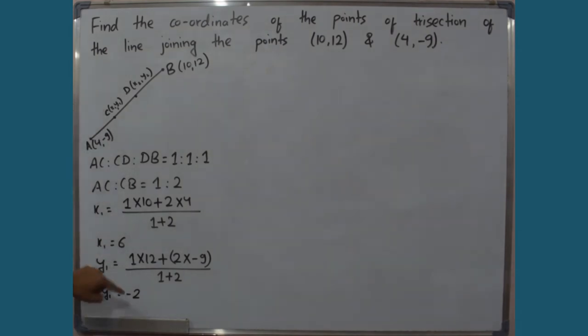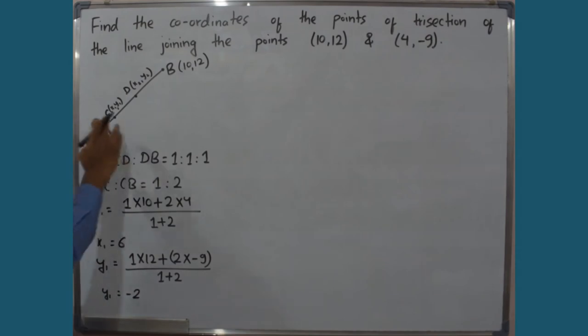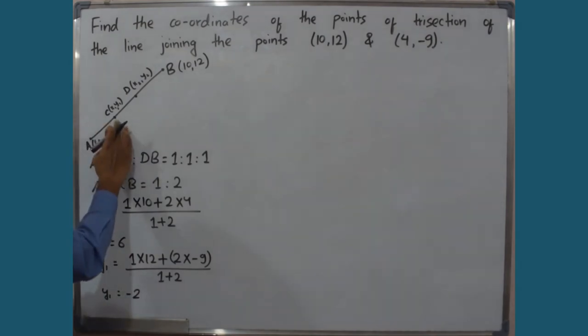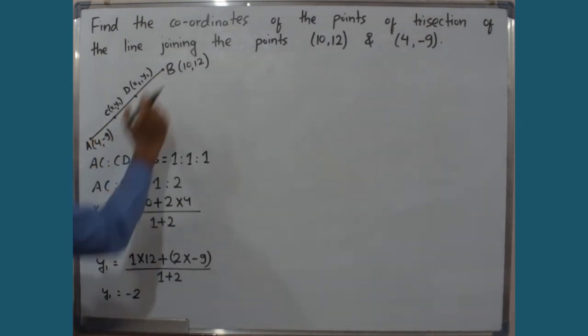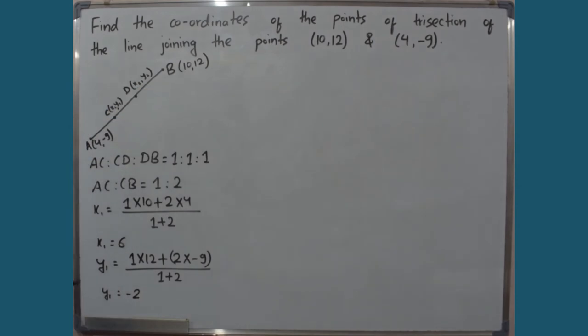So the coordinates of point C are (6, −2). For point D, AD to DB is in the ratio 2:1.